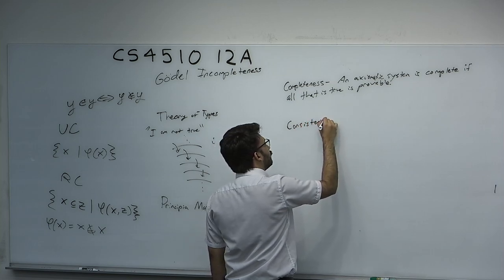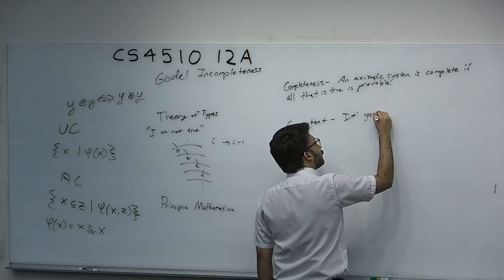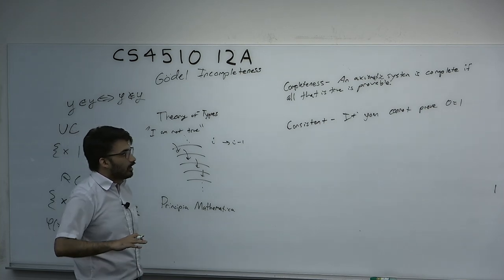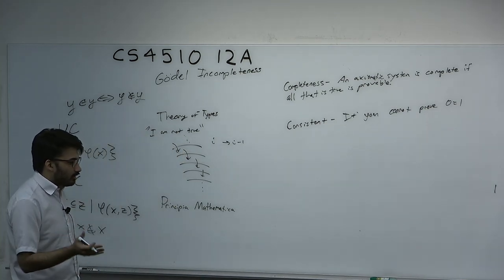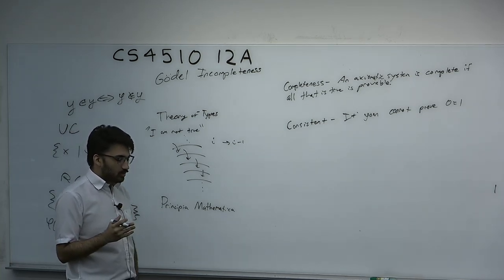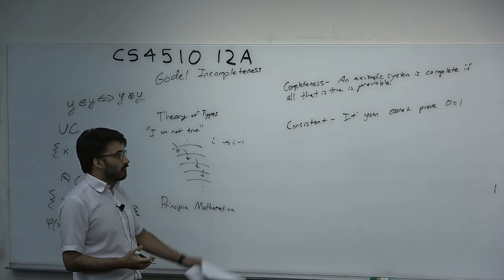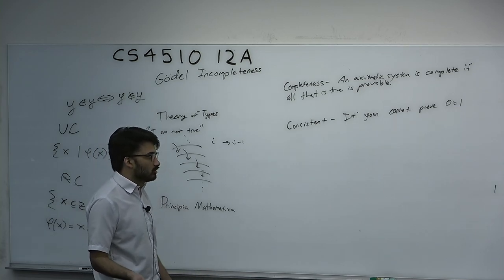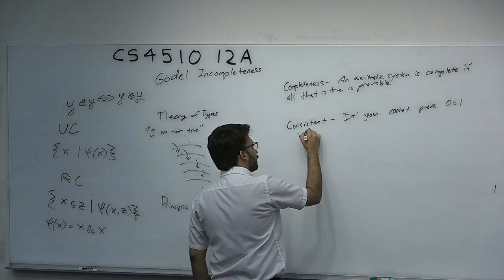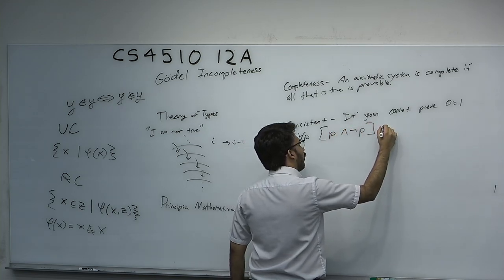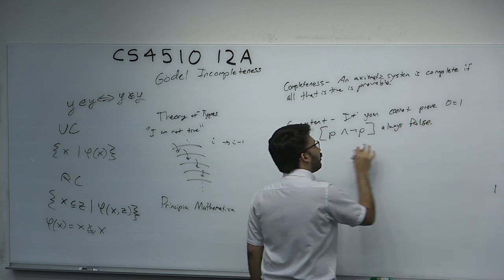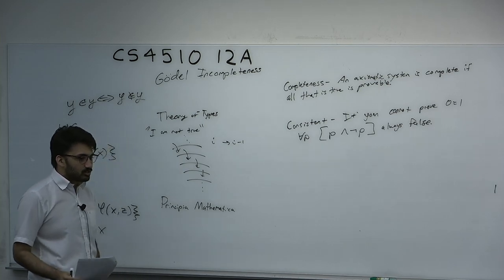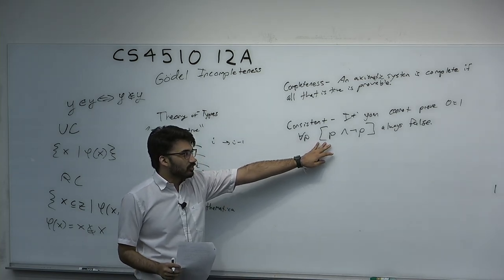A system is consistent if you cannot prove 0 equals 1. Completeness would be nice — everything true is provable — but consistency is a more essential feature. I would rather have a consistent system that's incomplete than a complete system that's inconsistent, because if you can prove 0 equals 1, then every theorem is both true and false simultaneously and the system is totally useless. For all statements P, P and the negation of P cannot both be true simultaneously.